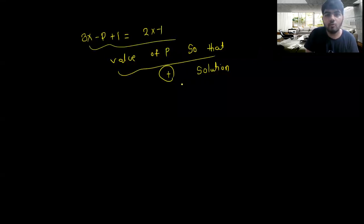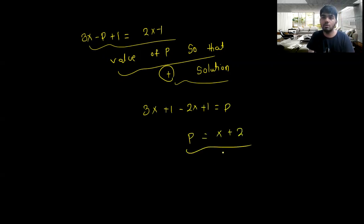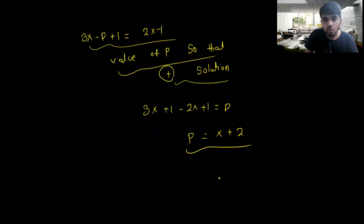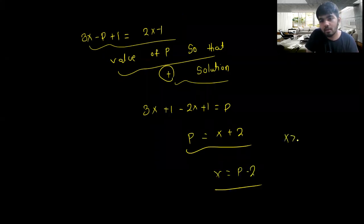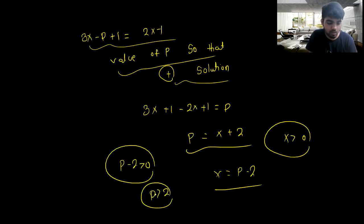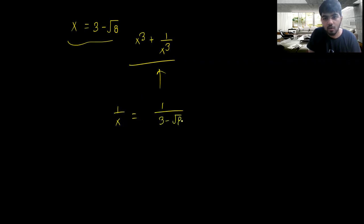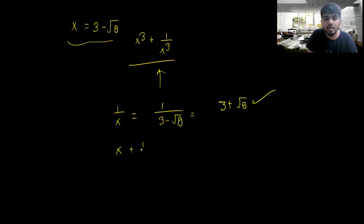Let me show you the value. How can we write this equation? We are given that x + 1/x = 6, and positive means greater than 0, so p - 2 is greater than 0. We need to find x³ + 1/x³. The value of x + 1/x is equal to 6.